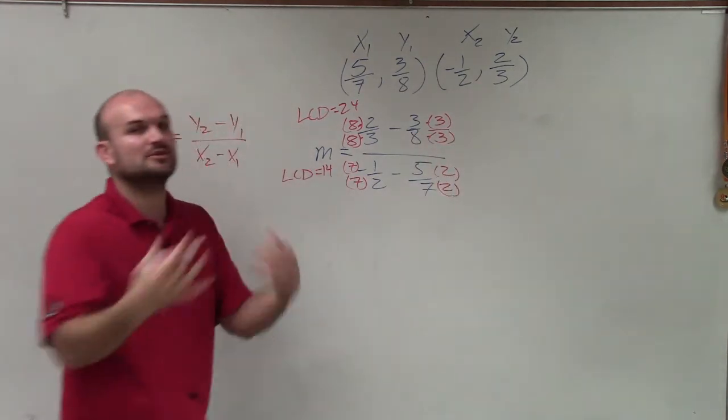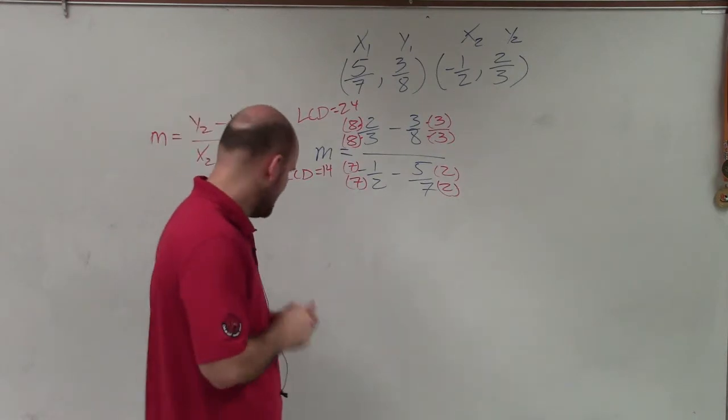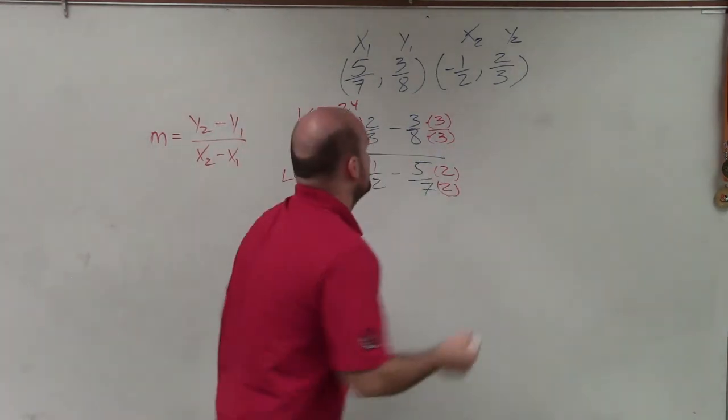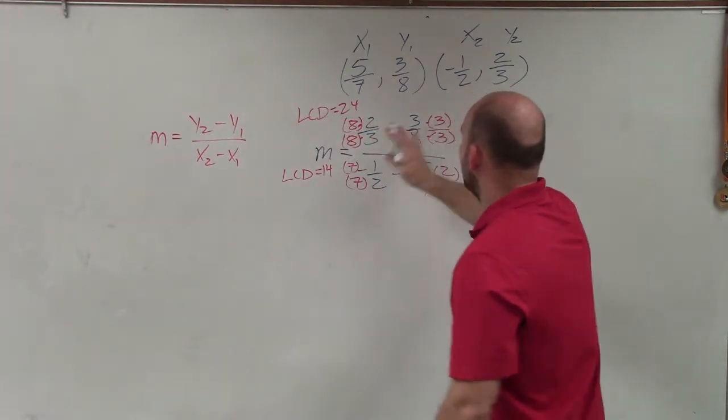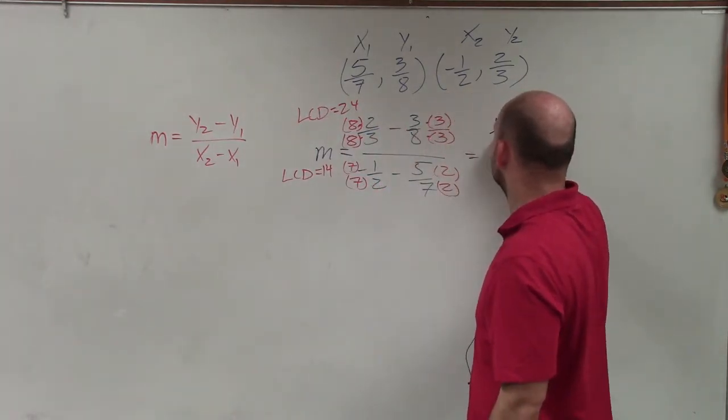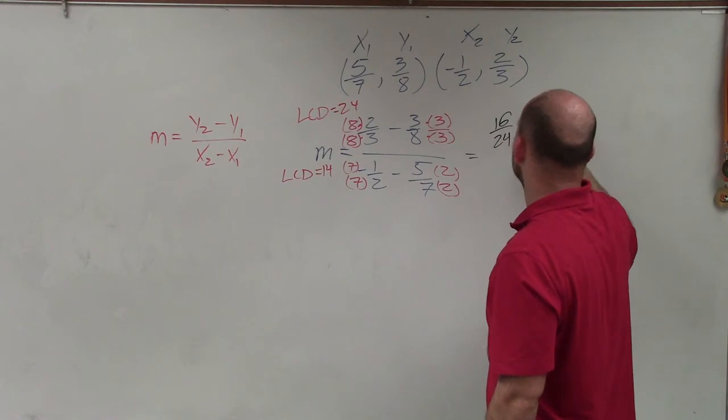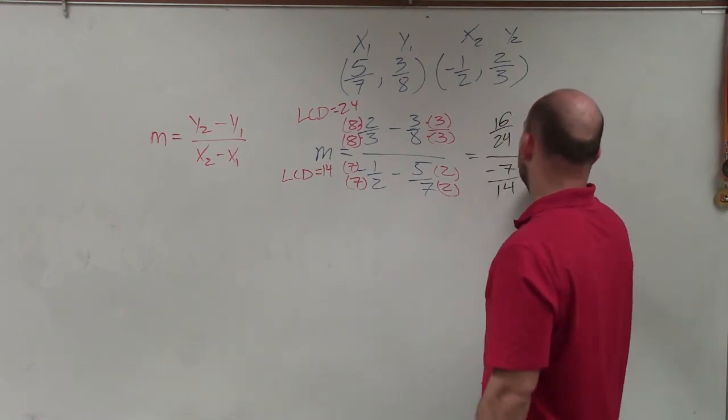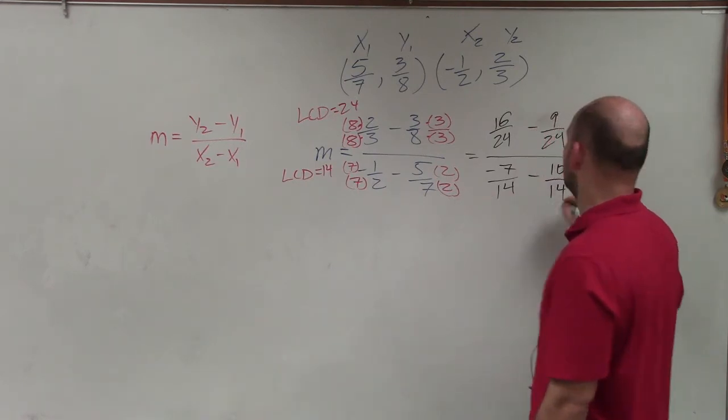All right, so let's multiply these across, and then we kind of see what our problem is again. I'm going to use this marker. All right, so when I multiply everything across, I have 16 over 24 minus 9 over 24, divided by negative 7 over 14 minus 10 over 14.